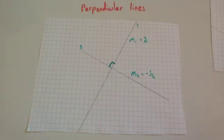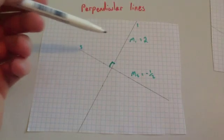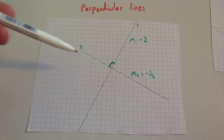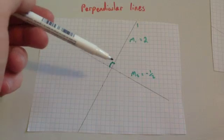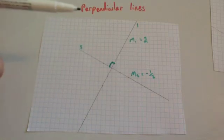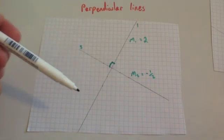In this video we're going to look at perpendicular lines. I've drawn two lines that are perpendicular to each other — in other words they cross at 90 degrees — and I've worked out their gradients.